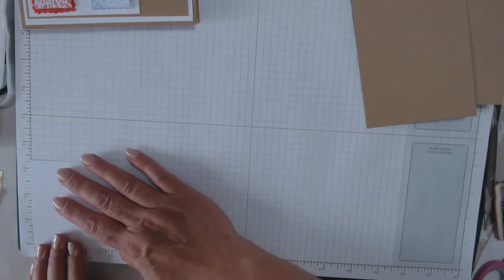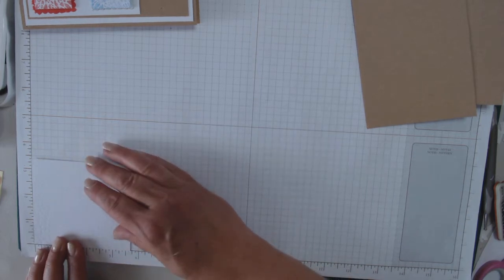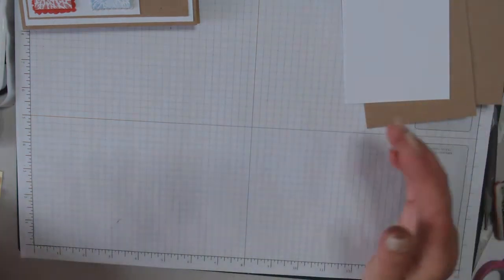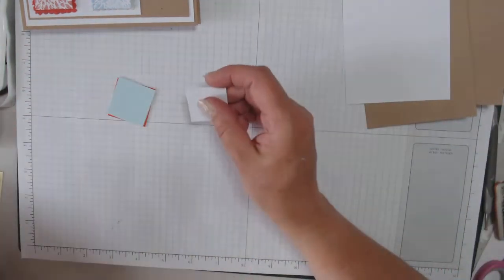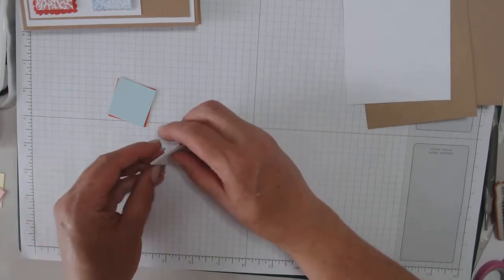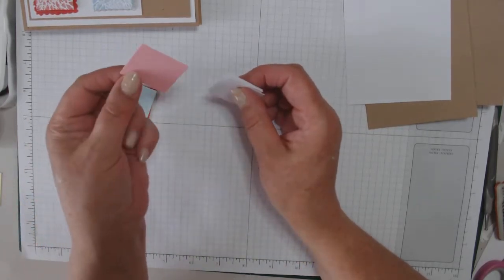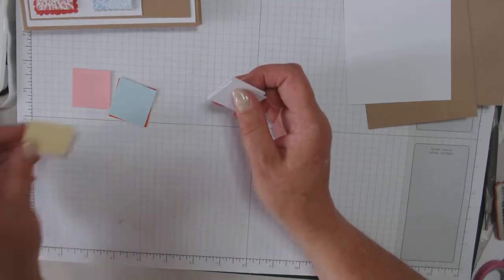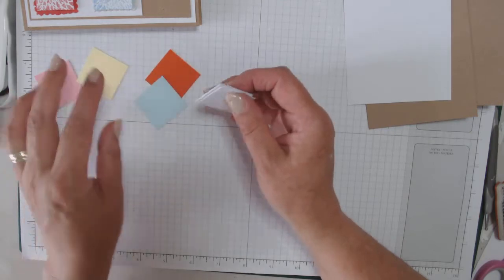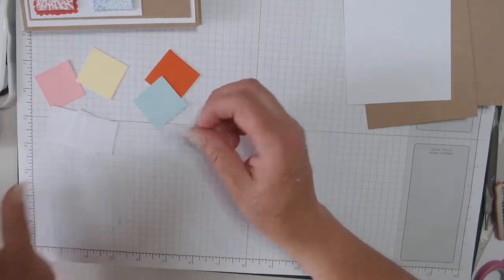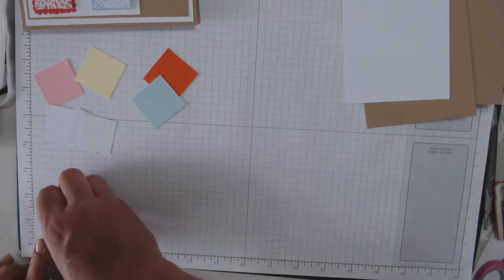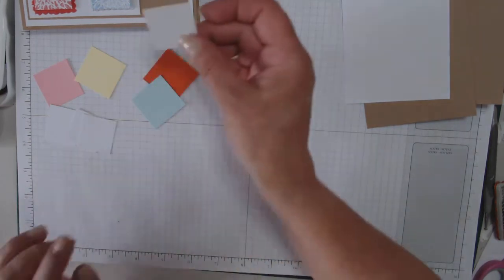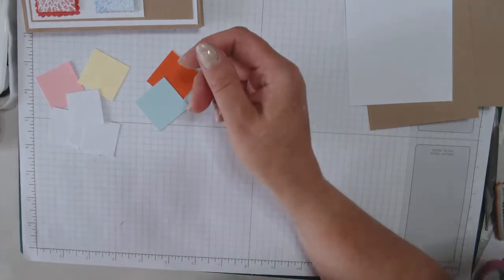Whisper White which is three and three eighths by three and five eighths. You'll need some squares, these are one and three eighths by one and three eighths. So you'll need four pieces. And some Whisper White, they are one and a quarter all the way around.